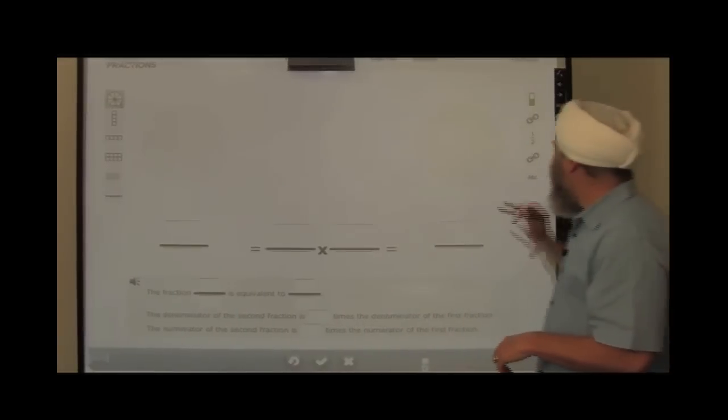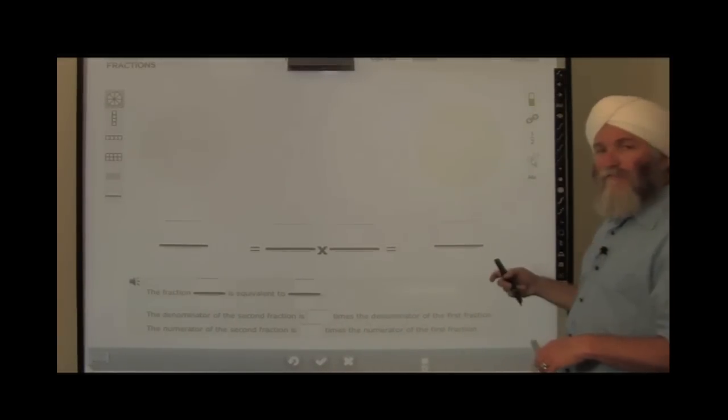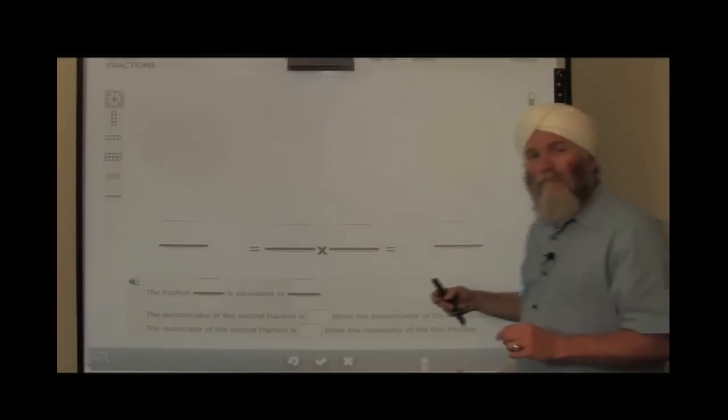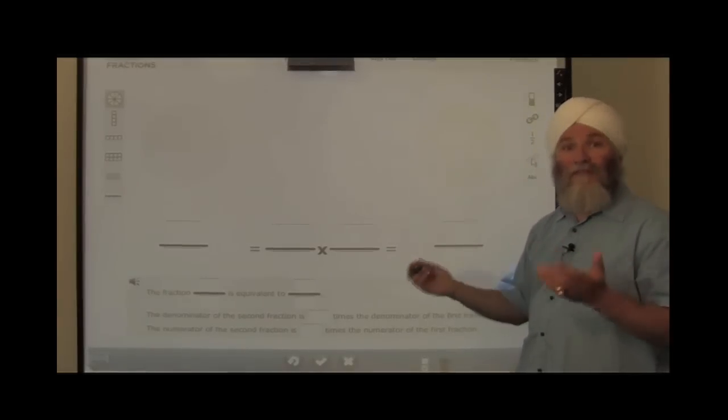I'm going to choose the circles model, and I'm going to unlink words from numbers in this instance. And I'm going to have the students start with one-third.